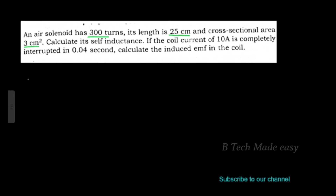Setting up the data: the solenoid number of turns N equals 300 turns. The length l equals 25 cm, which in SI units is 25 into 10 raised to minus 2 meter. The cross-sectional area A equals 3 centimeter squared, which equals 3 into 10 raised to minus 4 meter squared.